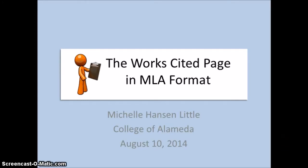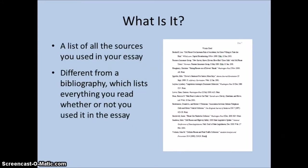The Works Cited page in MLA format is a list of all the sources that you used in your paper. It's like a bibliography in that it lists sources and all the publication information for them, but it's different in that a bibliography lists everything you read for your paper, while a Works Cited lists only those outside materials that you actually use in your paper.